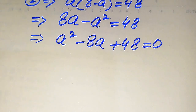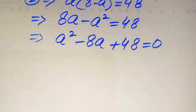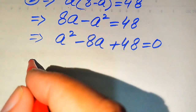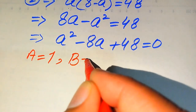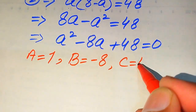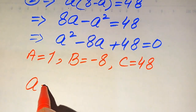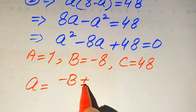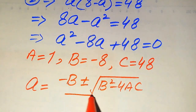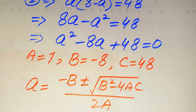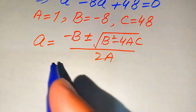There are three methods to solve a quadratic equation: factorization method, completing the square, and applying the quadratic formula. Here we use the quadratic formula. The coefficients are: a equals 1, b equals minus 8, and c equals 48. The quadratic formula is x equals minus b plus or minus square root of (b squared minus 4ac) divided by 2a. Now we substitute all values of a, b, and c into this formula.